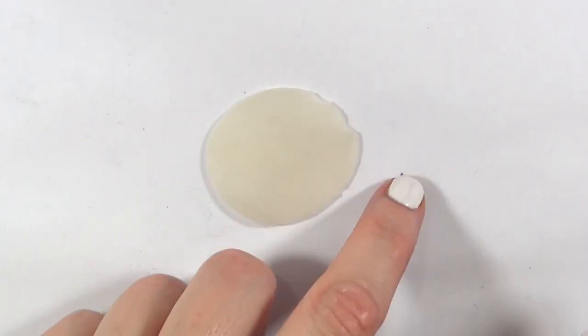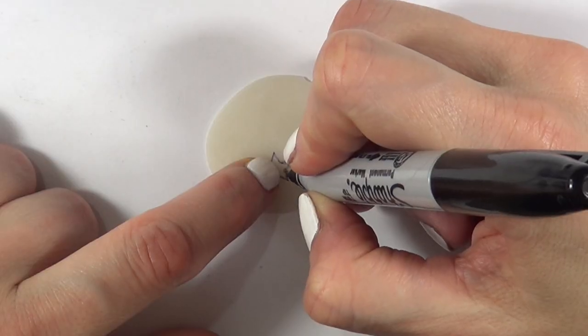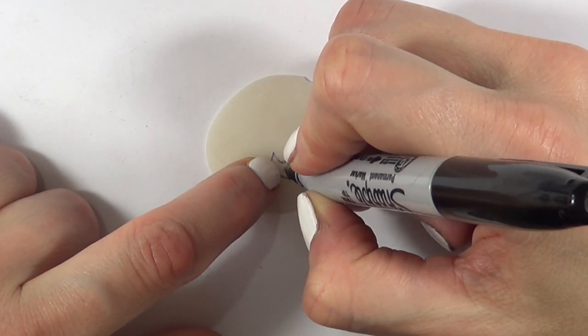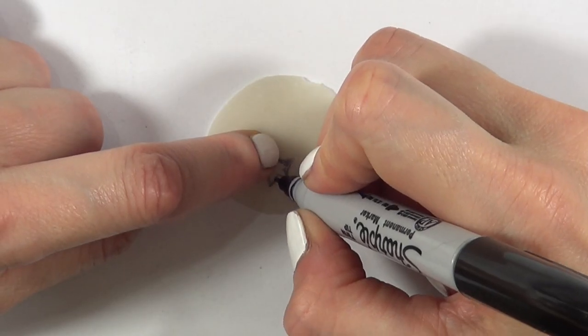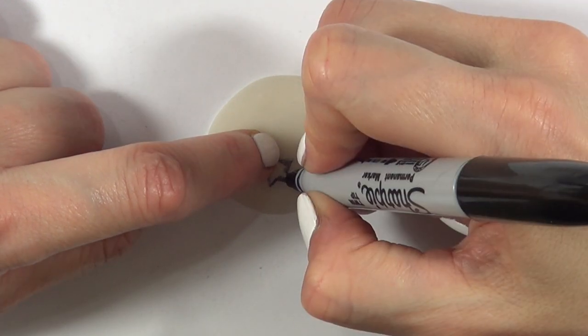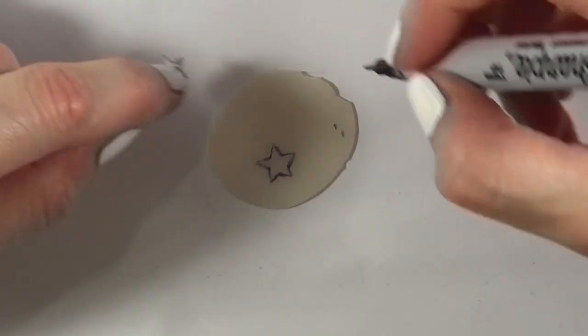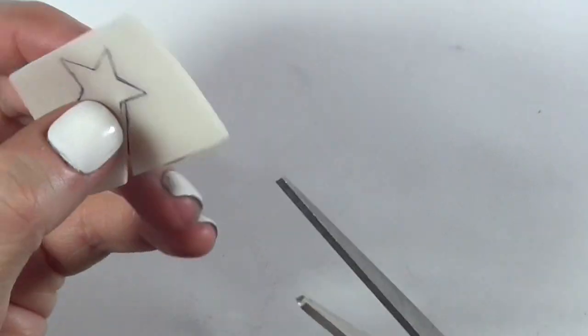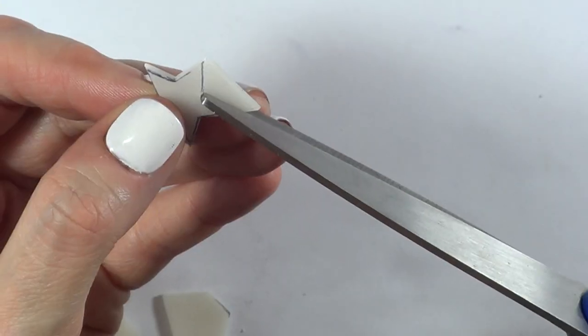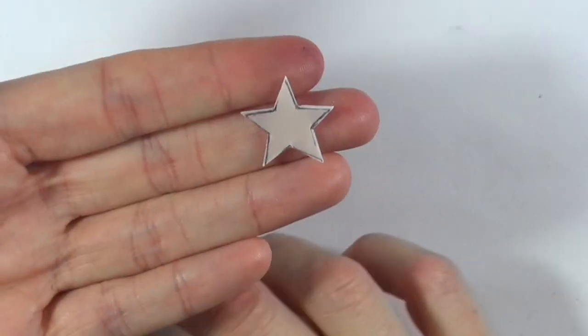Once that's rolled, I'm just going to be placing my stars on top and with a sharpie I'm just going to trace the shape of the star. For the small ones I just need two of them because it's just one pair. For the big ones I'm going to be working with four stars. Once I have the shapes I'm just going to make those pieces of clay.